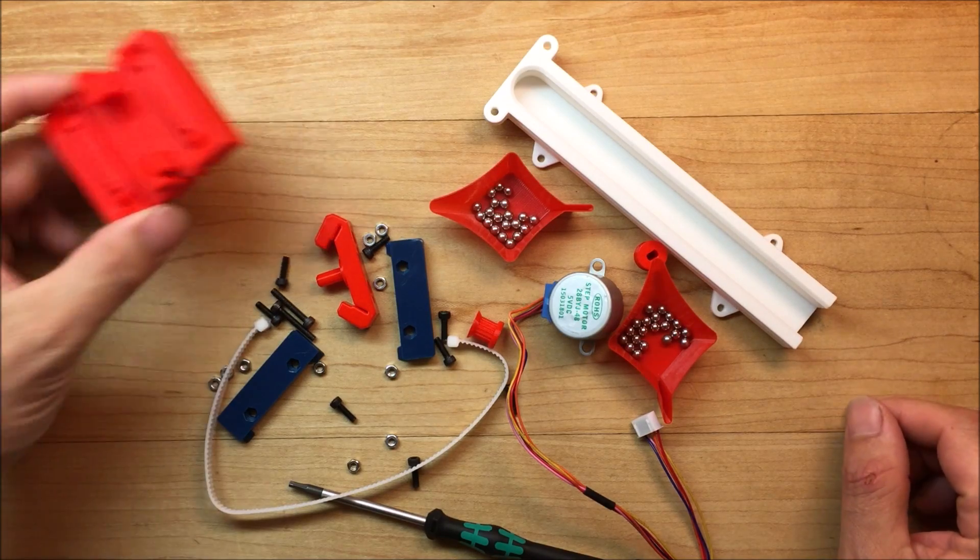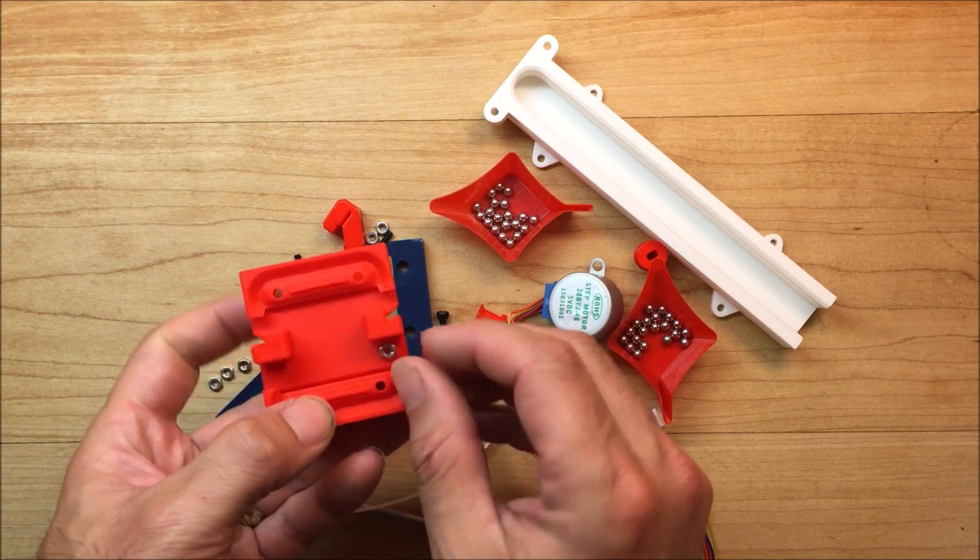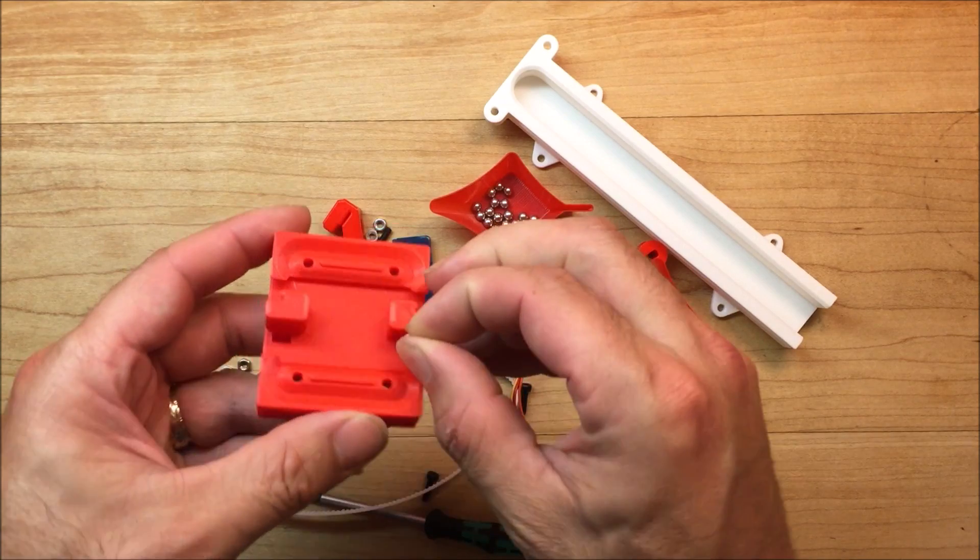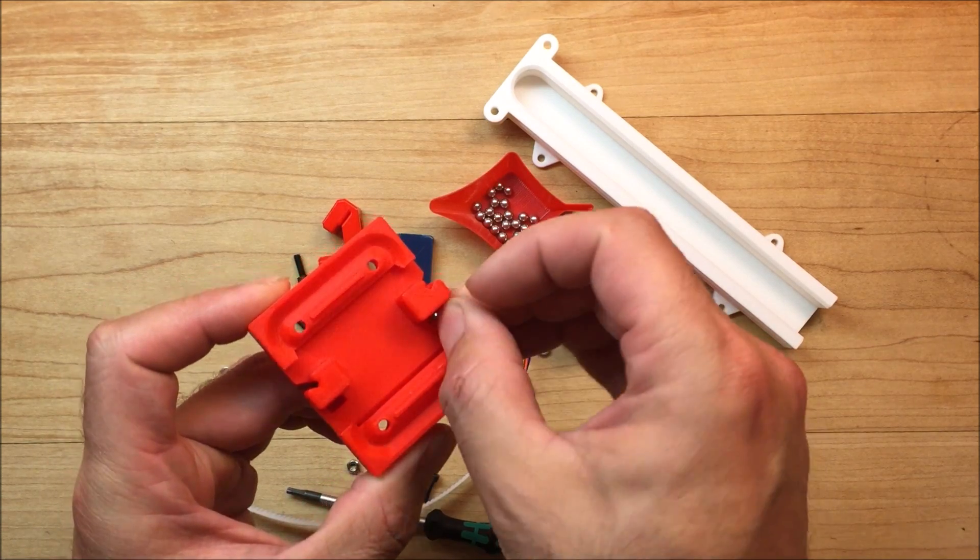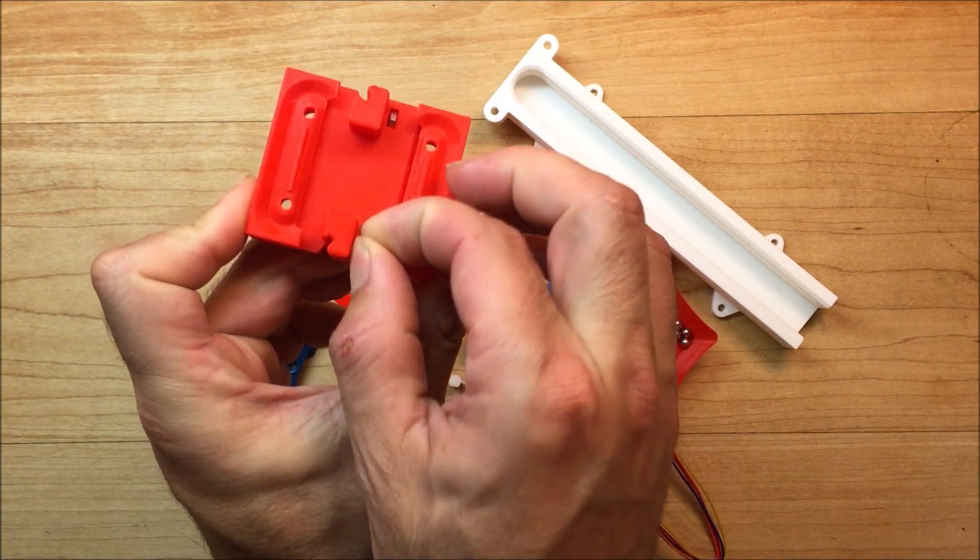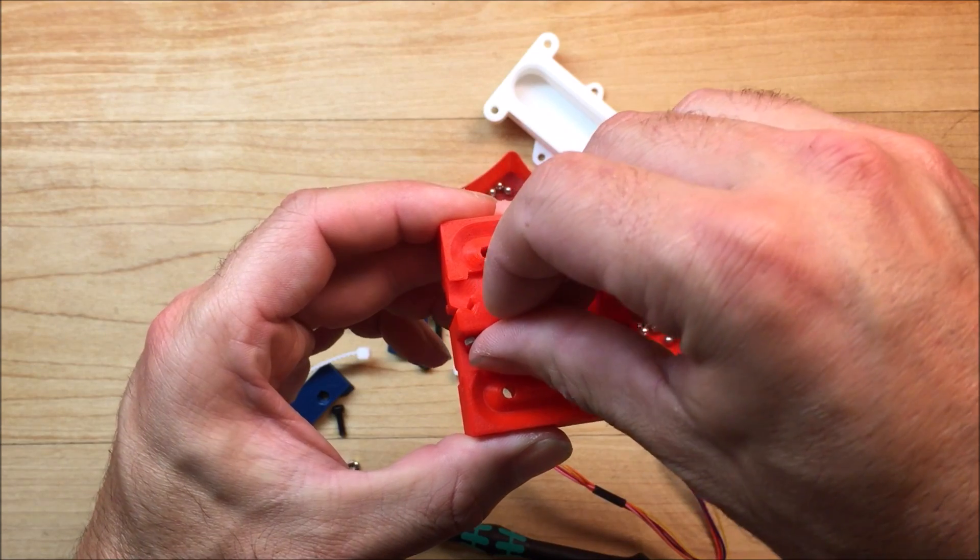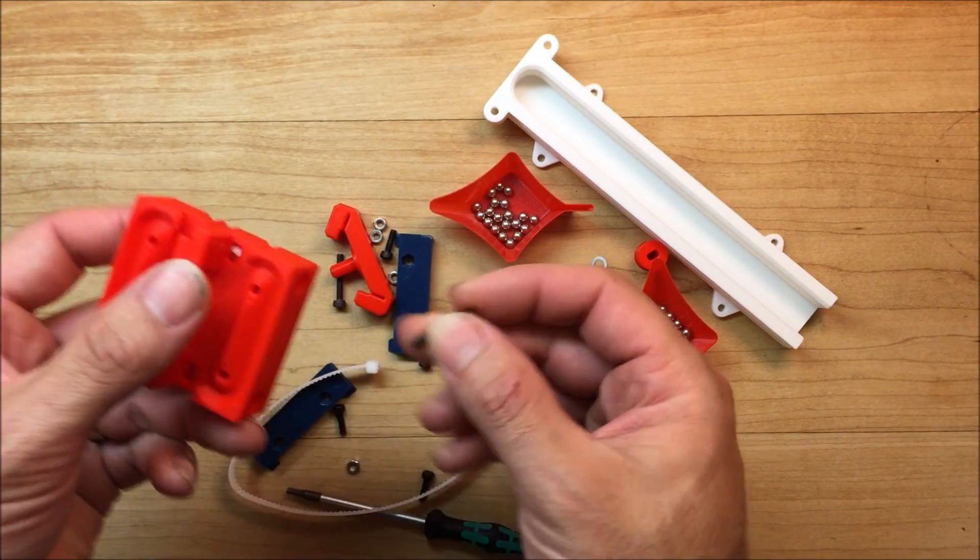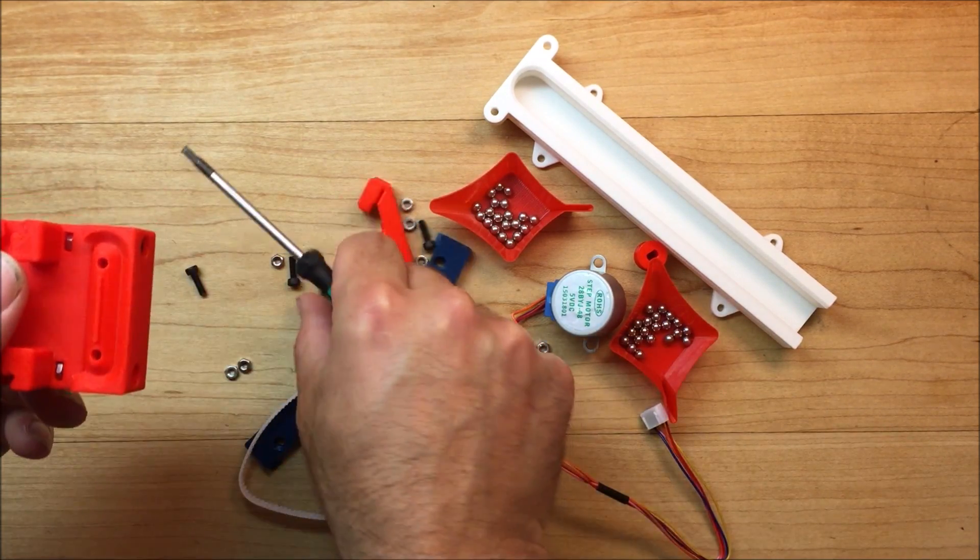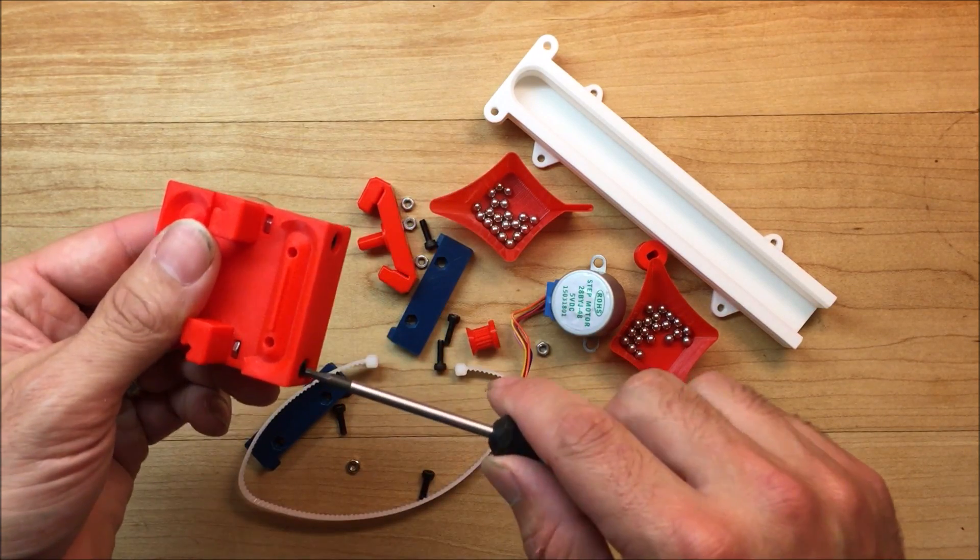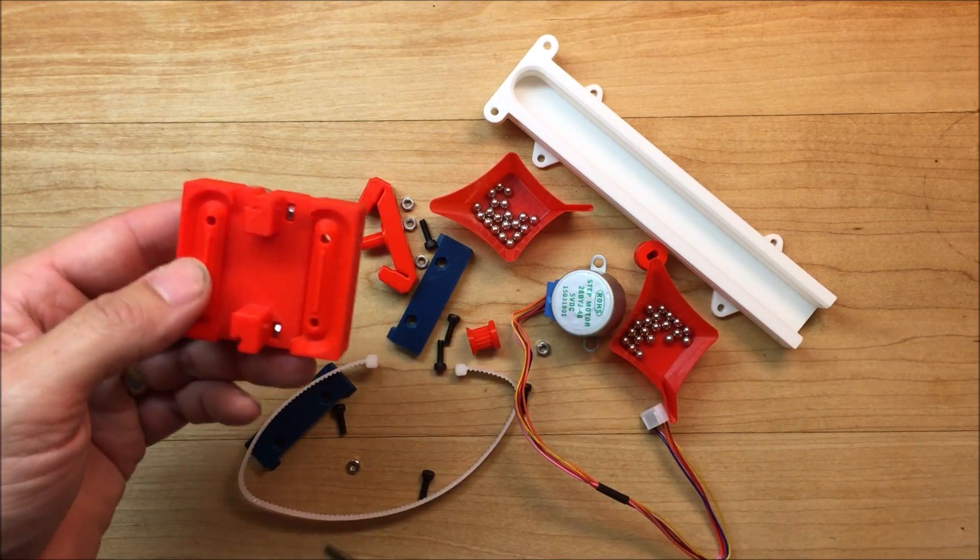The first thing you want to do when assembling this is to put these M3 by 20 millimeter long screws in. These screws are for adjusting the preload. All the screws on this are M3 socket head cap screws. Either 10 or I think this one's 20 millimeters long. The others are 10. So right now you just want to get them started because you won't be able to get them started later.